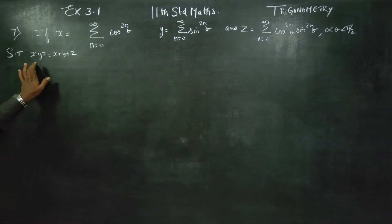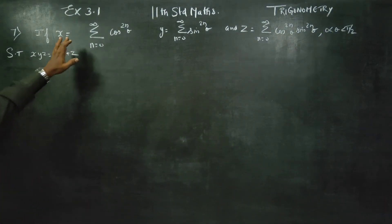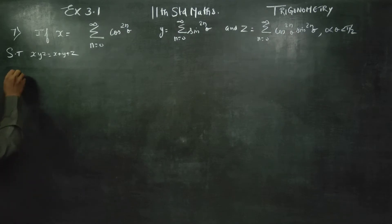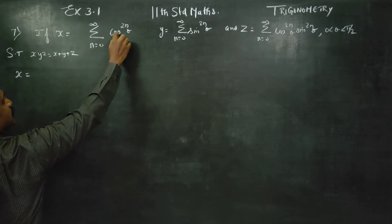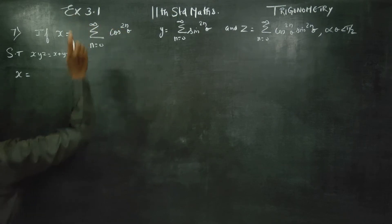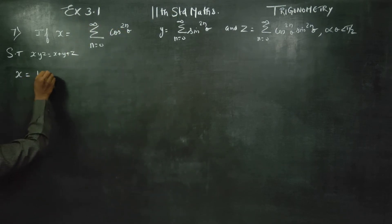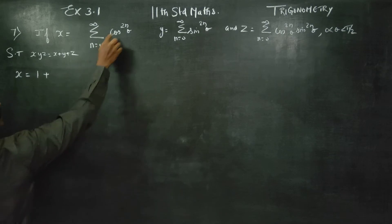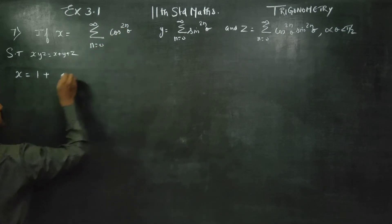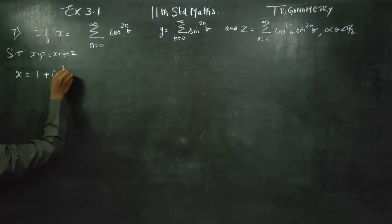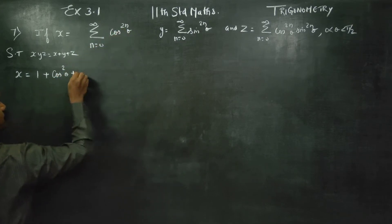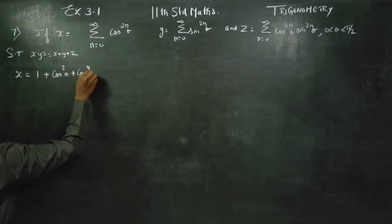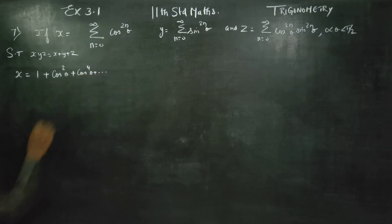If they use X, Y, Z is equal to X plus Y plus Z. First, in this sum, I am going to write X is equal to: starting from cos power 0 which becomes 1, plus 1 into cos square theta, plus cos power 4 theta, dot dot dot. This is an exponential series.